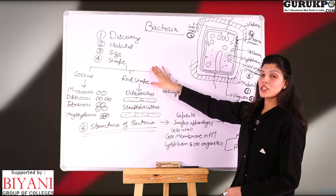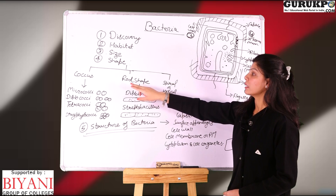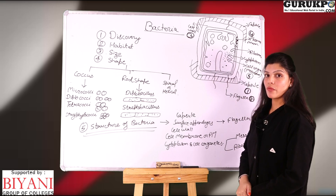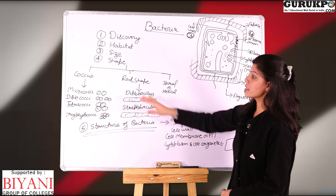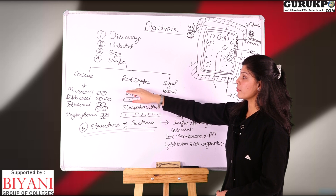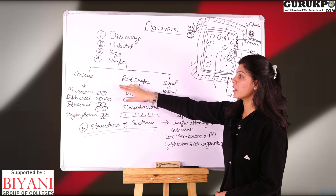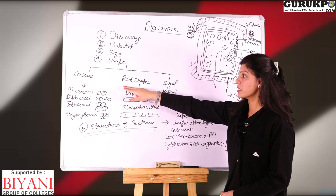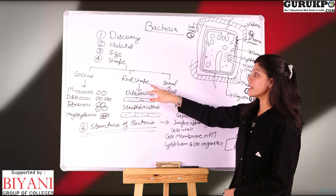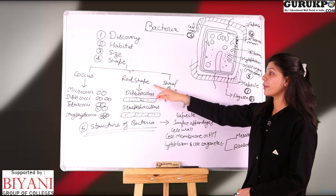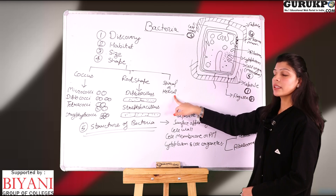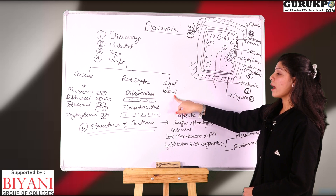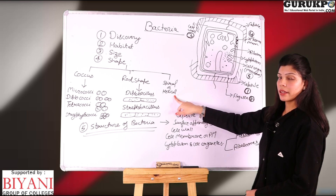Fourth category is the shape. There are various kinds of shapes of bacteria. The major types are: first is the coccus shape bacteria, second is the rod shape bacteria, and third is the spiral or helical shape bacteria.